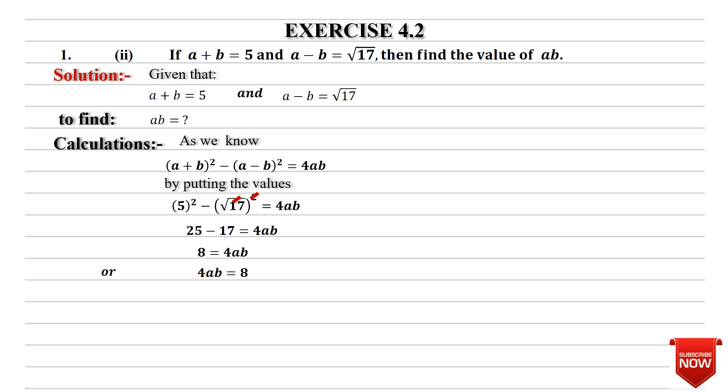Now because I have ab value to find, so dividing by 4 on both sides. You have left-hand side and right-hand side divided by 4. Now 4, 4 cancel. And here on the right-hand side, 8 divided by 4 is equal to 2. So here the value of ab is equal to 2. And this is the simplest form, and this is the answer.